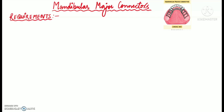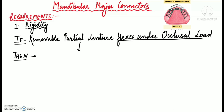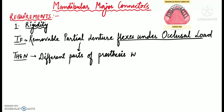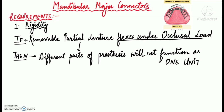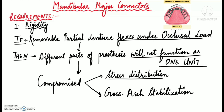Now let's talk about the specific requirements of mandibular major connectors. Apart from the general considerations for major connectors, mandibular major connectors should fulfill certain specific requirements. The first is rigidity, which is the principal requirement for any major connector. If the removable prosthesis flexes under occlusal load, the different parts will not act as a single unit; instead they will move independently, resulting in compromised stress distribution and compromised cross-arch stabilization.